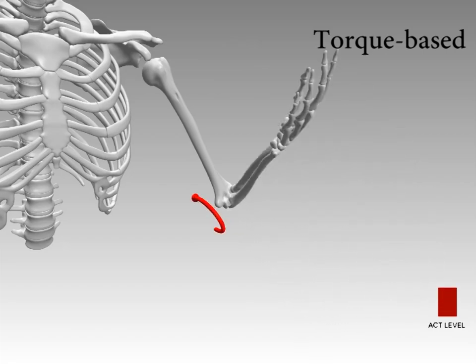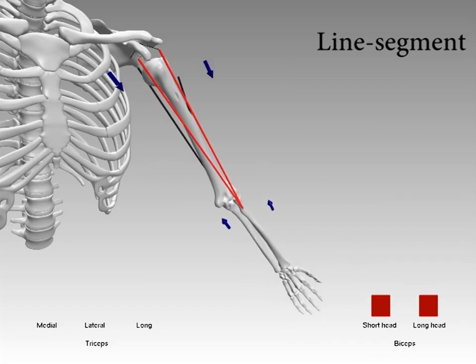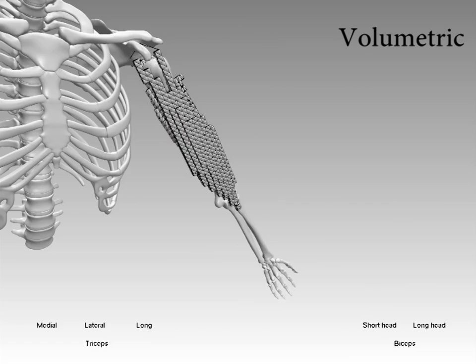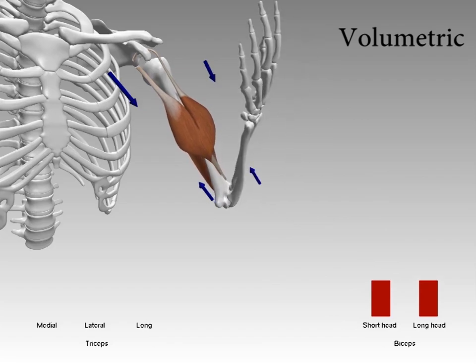Previous human skeletal systems have been driven by either torque actuators or motor units simplified to line segments. Our system uses the contraction of volumetric muscles to actuate the skeletal motion.